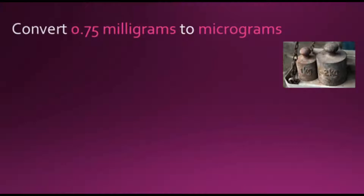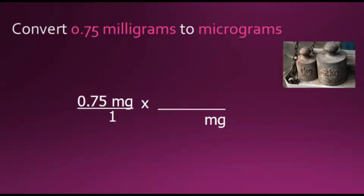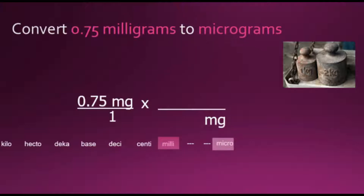This problem asks for a conversion from a specified amount of milligrams to micrograms. We take the given information and express it as a fraction with a denominator of 1, then multiply by a conversion fraction that has milligrams in the denominator. Using our metric prefix table, we determine which prefix is larger: milli is to the left, so our 1 goes on milligrams. Counting the number of spaces — each with a value of 10 — and multiplying 10 to the 3rd power gives us 1000, so 1 milligram equals 1000 micrograms.